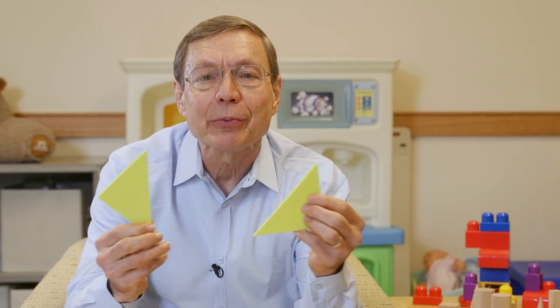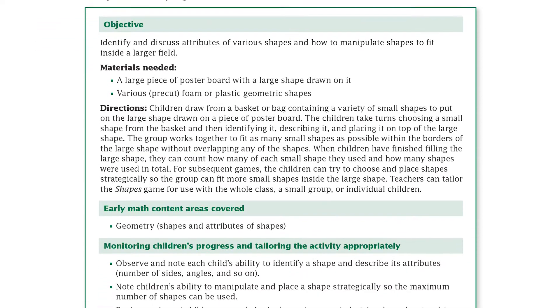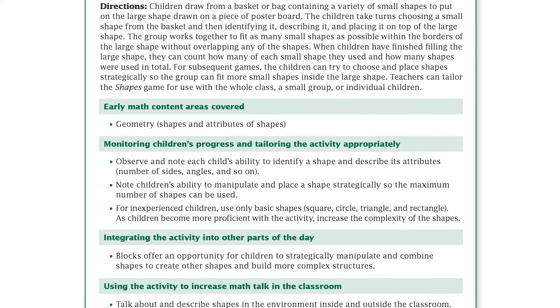Next, children can explore how shapes can be combined and separated to form new shapes. When children manipulate shapes, they learn that changes in orientation do not affect the critical attributes of the shapes. As they practice combining shapes, it is an opportunity for children to learn about spatial vocabulary such as in, on, under, beside, above, or below. Playing games such as the shapes game from the practice guide supports children in learning spatial relations and shape combinations.